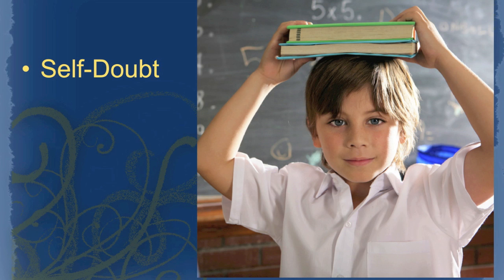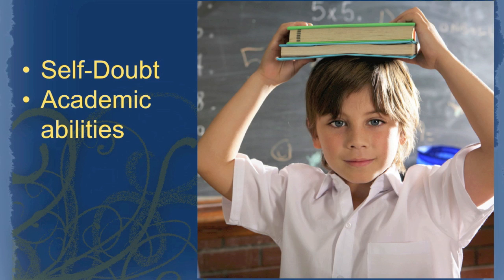The consequences of apathy can be destructive to students in several ways. First, students develop self-doubt and believe they don't have anything to offer, and academic abilities can suffer. Students begin to believe that they cannot do well in school, so they stop trying. The long-term consequence is a belief that they have no skills to offer the world in adulthood.